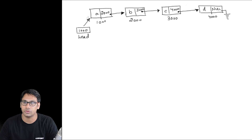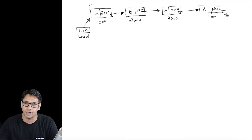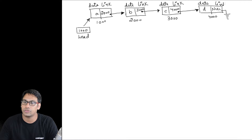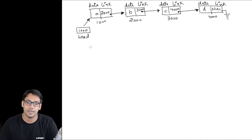All these basic units in a linked list are called nodes, and they all have the same structure. Each node has a data part and a link part — this applies to the first node, the second, the third, and the fourth. All these nodes are of the same type and have the same structure.